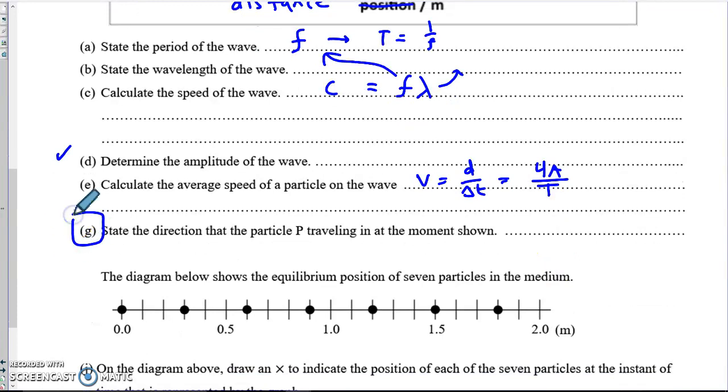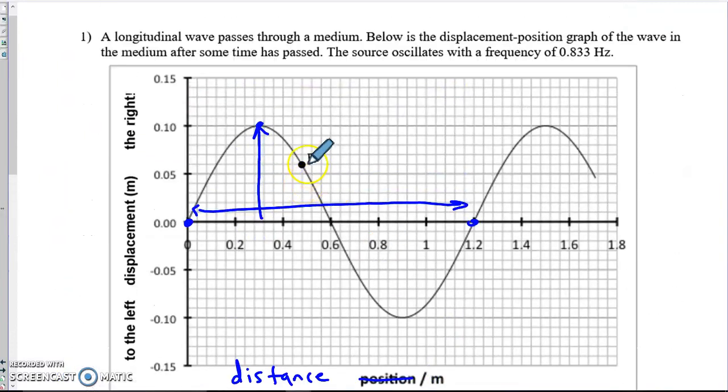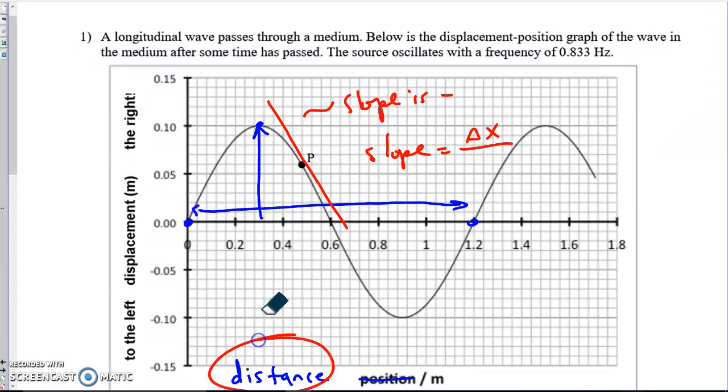Finally, part G. State the direction of the particle P at the moment shown. If I look back up at particle P, you might think we should go draw a tangent line, say, well, hey, the slope is negative. So this particle is moving to the left. But we can't do that. Because slope on this graph would be the displacement divided by distance. And that is not equal to velocity. The slope only tells us velocity if you're looking at a displacement or position time graph. Time is not on the x-axis here. So what do we do instead?